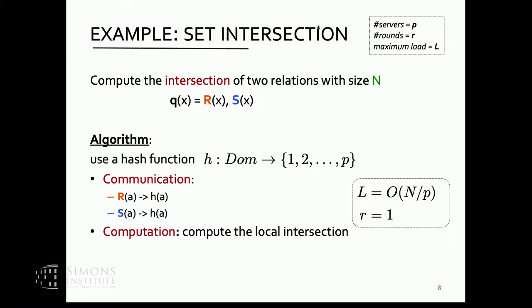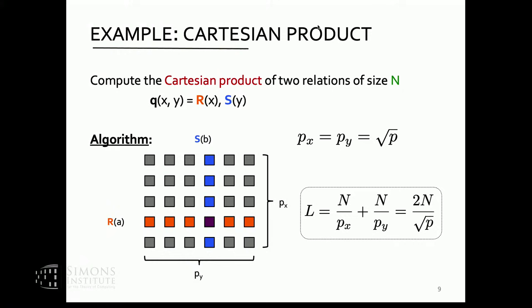Here we get an optimal algorithm — load is N/P with one round, best case scenario. Now let's do something a little more tricky: compute the Cartesian product of two relations. Suppose they have the same size and we want to output one pair per machine. One approach would be to broadcast one relation to all machines and hash-partition the other, but then your load would be N + N/P — order of N — which is bad. Can we do better?